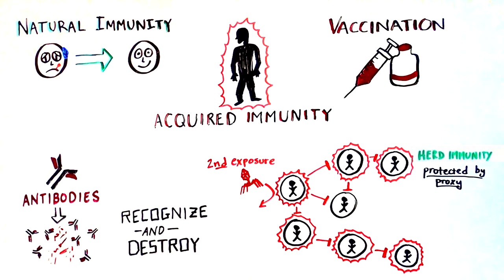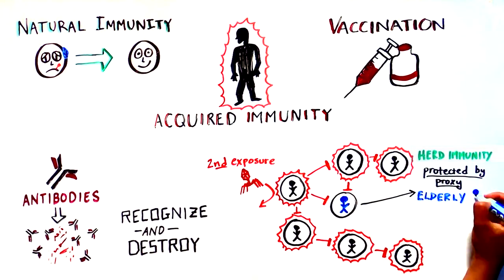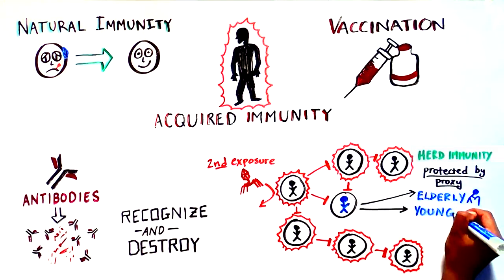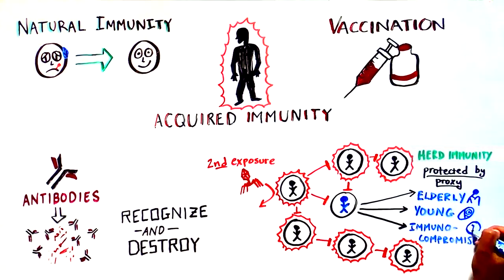This is particularly important for people whose immune systems are too fragile to develop natural immunity or get a vaccination, like the elderly, the very young, or those who are immunocompromised.